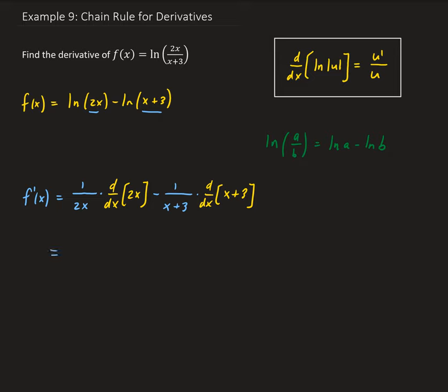This gives us 1 over 2x times 2, minus 1 over x plus 3 times 1. We can cancel out the 2, so that leaves us with 1 over x minus 1 over x plus 3.